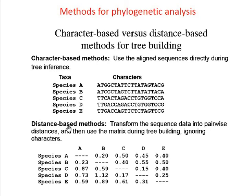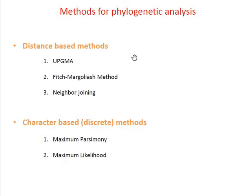Mainly we are using character-based methods or distance-based methods for phylogenetic analysis. In character-based methods, aligned sequences — for example, multiple sequence alignments — are directly used for tree building or tree inference. In distance-based methods, the sequence data is transformed into a pairwise distance matrix, and this matrix is used for tree building. Methods include UPGMA, Fitch-Margoliash, Neighbor Joining under distance-based, and Maximum Parsimony and Maximum Likelihood under character-based. PHYLIP software has different programs for each.